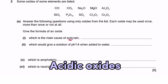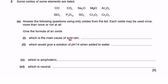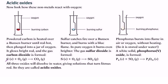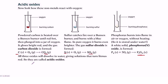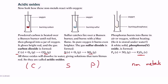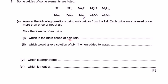Part i asks for the main cause of acid rain. When we see the word 'acid,' we look for an acidic oxide. For example, carbon burns in oxygen to produce carbon dioxide, sulfur burns in oxygen to produce sulfur dioxide, and phosphorus burns in oxygen to produce phosphorus pentoxide. All of these elements are non-metals, so non-metal oxides usually produce acidic oxides.